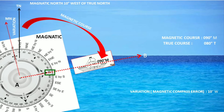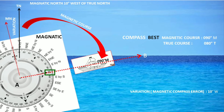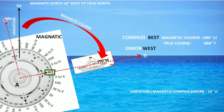As I remember it — how to use variation if I have a magnetic value and a true value — I remember it like this: compass best, error west. The compass is more — the error, that is the difference between magnetic and true — is variation west. And you name it west.